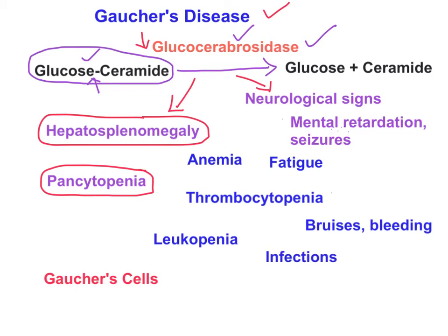Gaucher's disease patients have pancytopenia because the bone marrow is affected. Long bone marrows are affected, leading to decreased red blood cells — causing anemia and fatigue — decreased platelets causing thrombocytopenia with risk of bleeding and easy bruising, and decreased white blood cells causing leukopenia and neutropenia, raising the risk of infections.